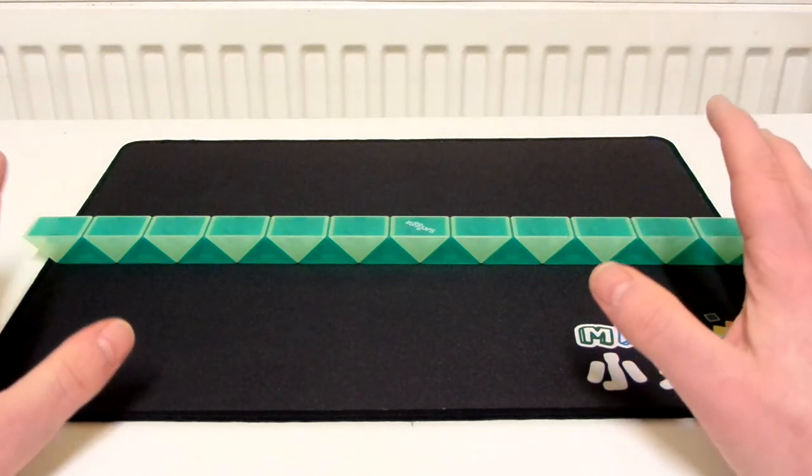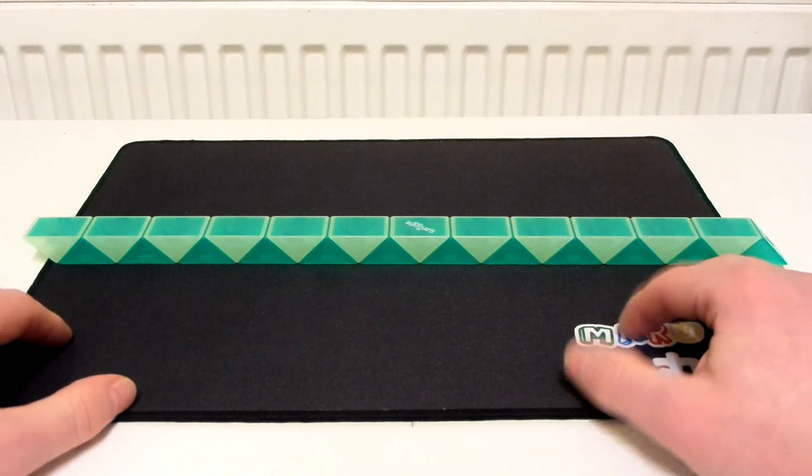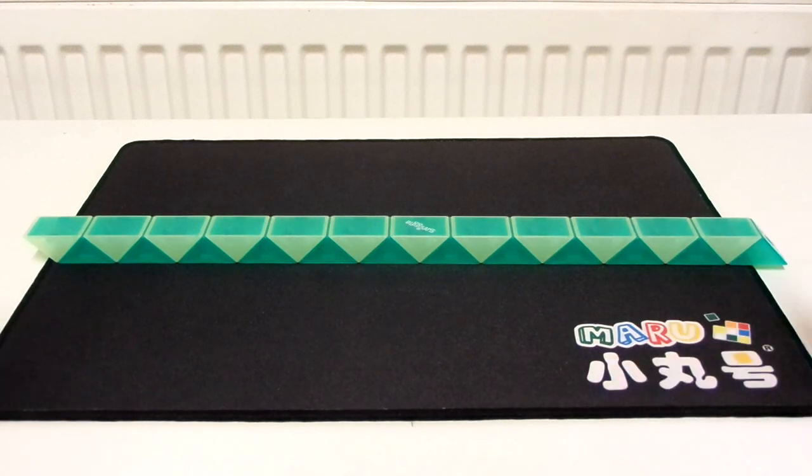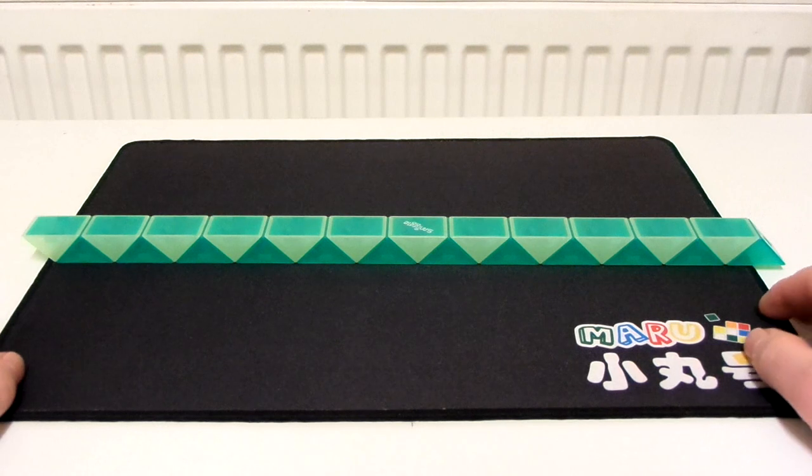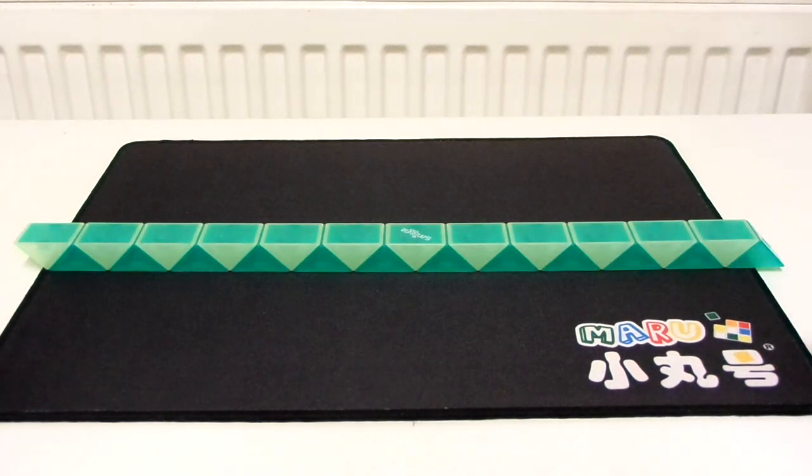In today's video I'm going to show you how to turn a 24-piece magic snake into a key. This is quite a simple one and the snake that I'm going to be using in this video is a 24-piece Smiggle glow-in-the-dark snake.